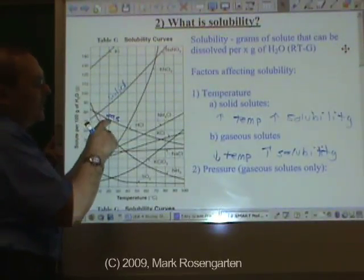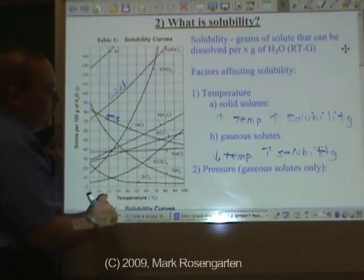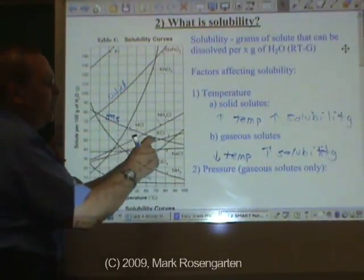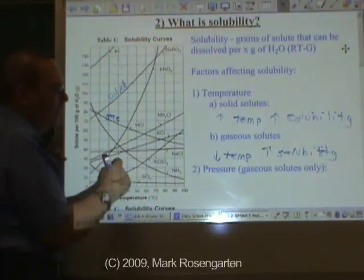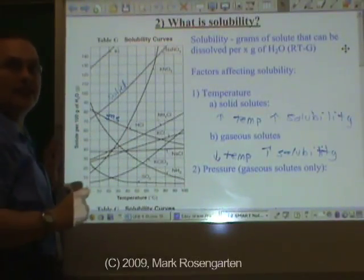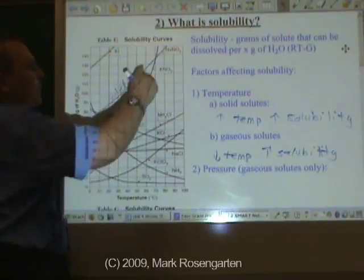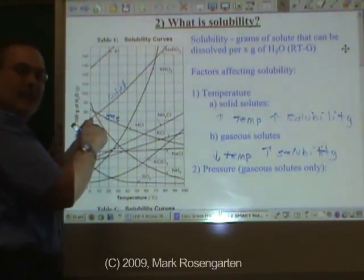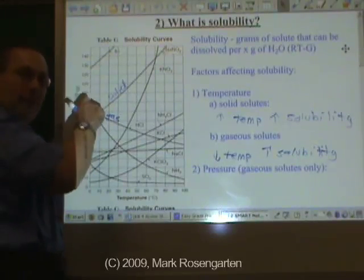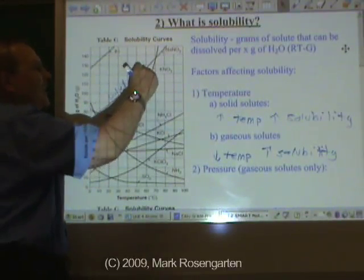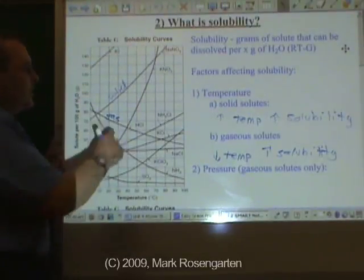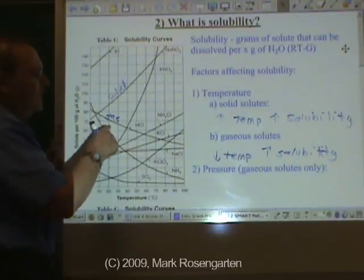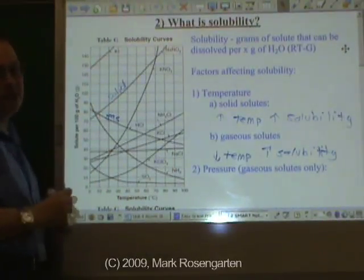HCl, hydrogen chloride gas, gets less soluble as you increase the temperature. Why? Because its entropy change is not favored. And the higher the temperature, the more unfavored it is. Here, for sodium nitrate, which is a solid, when you dissolve it in water, its entropy change is favored, going up in entropy. And increasing temperature just makes it even more favored. So solids get more soluble as temperature increases, and gases get less soluble as temperature increases.